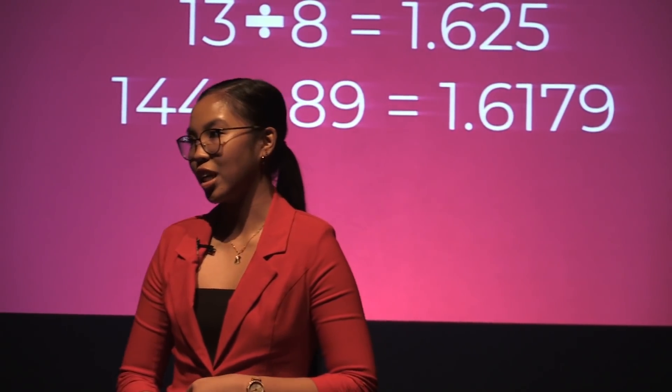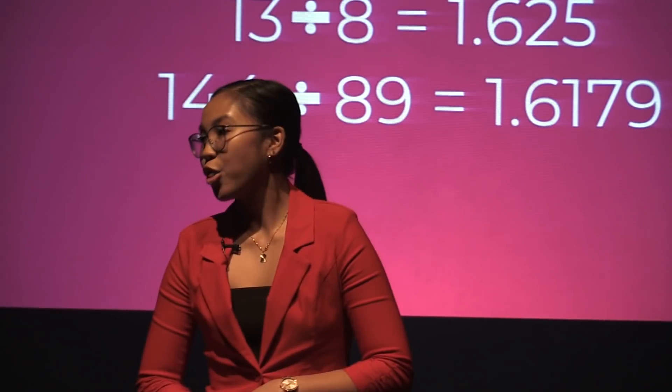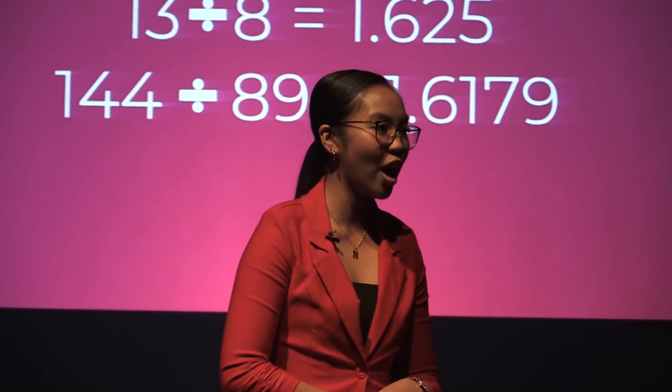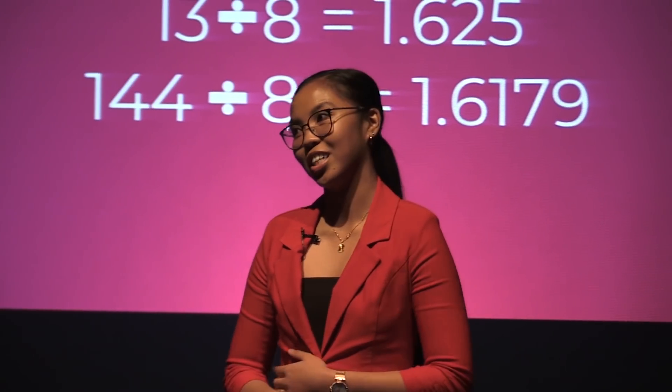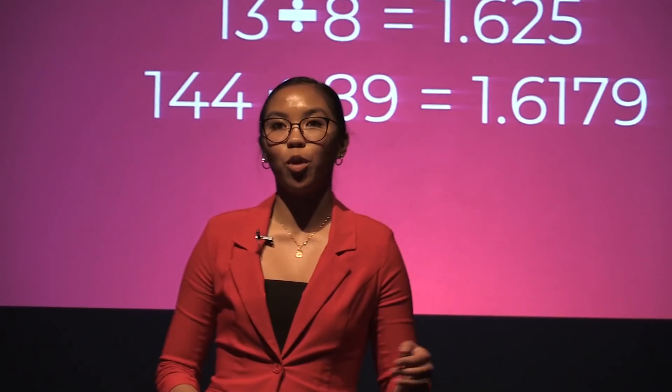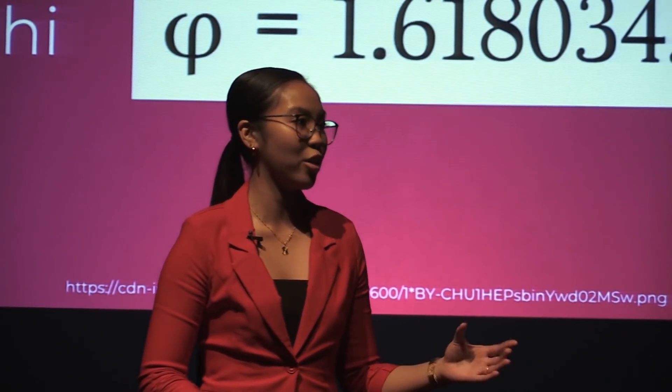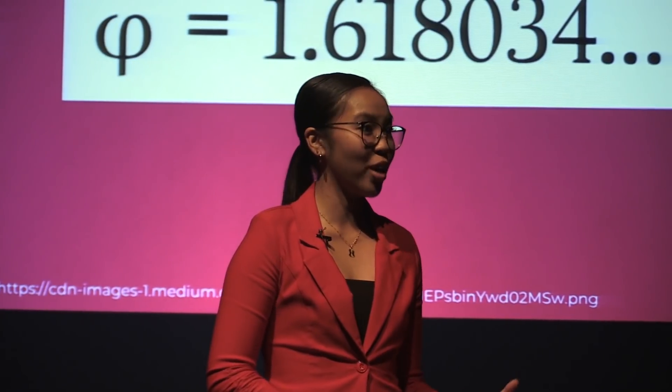What's even more interesting is that if you take a number in the Fibonacci sequence and divide it by the previous number, the quotient becomes closer and closer to a single value: 1.618. For example, 5 divided by 13 equals 1.667, 13 divided by 8 equals 1.625, and if you were to continue on with this series, 144 divided by 89 equals 1.617. This is certainly not a coincidence. This value of 1.618 is defined as phi in mathematics and is better known as the golden ratio.